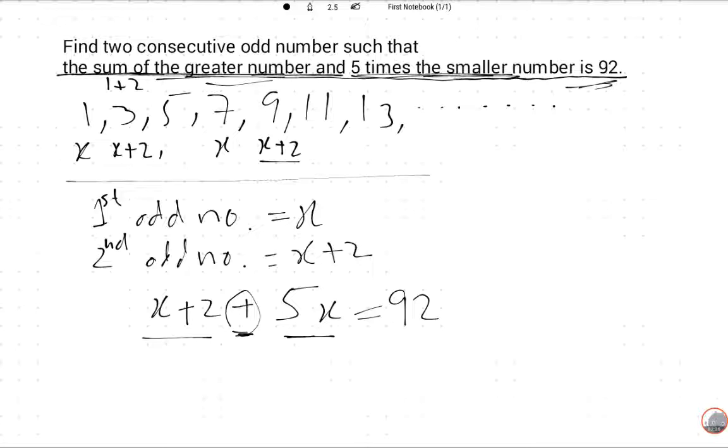Now it is simple. We will solve further: 6X plus 2 is equal to 92, so 6X is equal to 92 minus 2. Therefore, 6X is equal to 90.